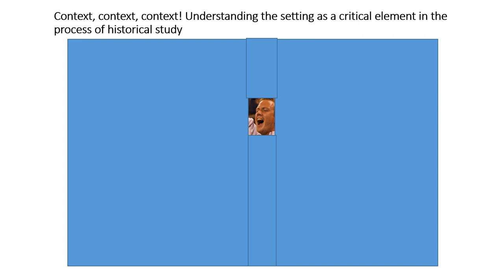Context, context, context. Understanding the setting is a critical element in the process of historical study. Here's a simple example — sometimes simple examples are best for clarity. You see a picture of what appears to be a guy with his mouth open. Without the picture around him, without knowing what's around him, it's hard to know what he's doing. Why does he have his mouth wide open? Is he ecstatically happy? Is he yelling at somebody in anger? Could he be in religious euphoria? Could he be in a choir singing extremely high notes? All those things are possible.